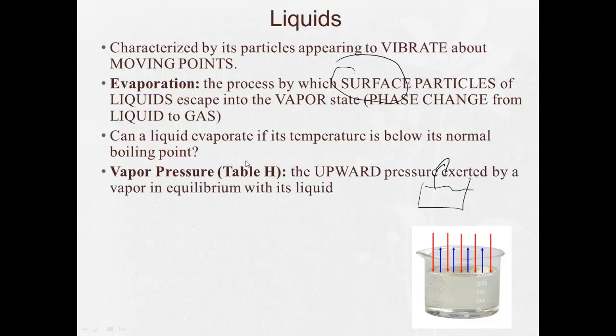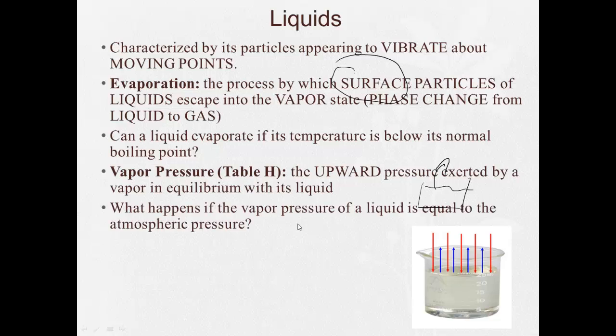Vapor pressure, which is Table H in our reference table, is the upward pressure exerted by a vapor in equilibrium with its liquid. These blue arrows are vapor pressure. These red arrows are atmospheric pressure pushing back. The stronger the atmospheric pressure, the lower the vapor pressure. A weaker atmospheric pressure will yield a higher vapor pressure. And what happens if the vapor pressure equals the atmospheric pressure? That's when we get boiling.